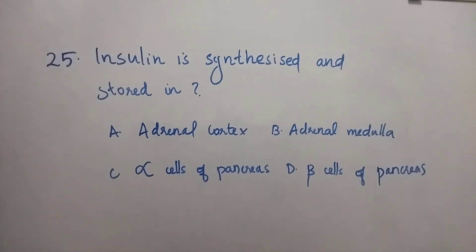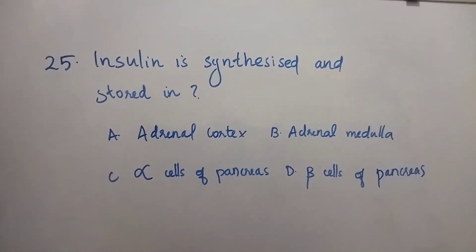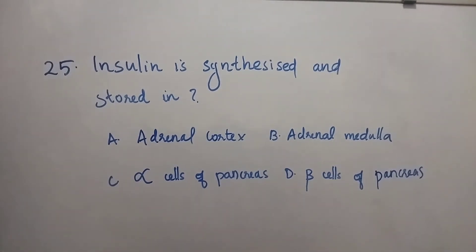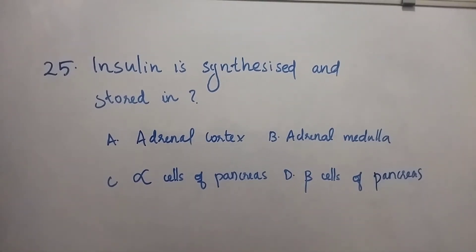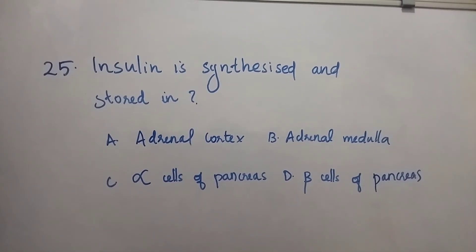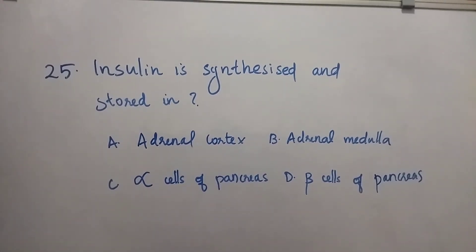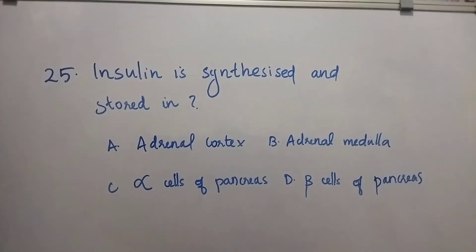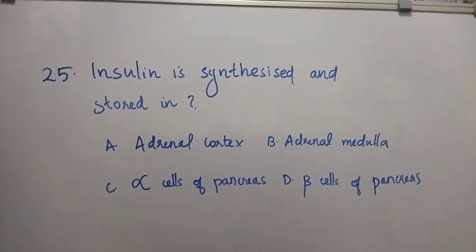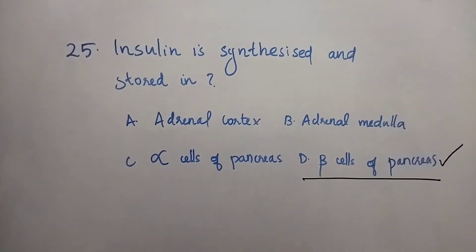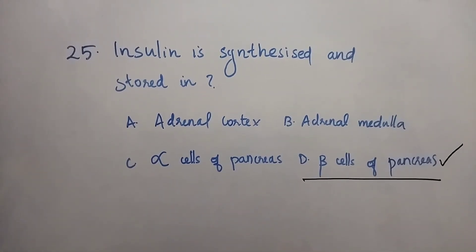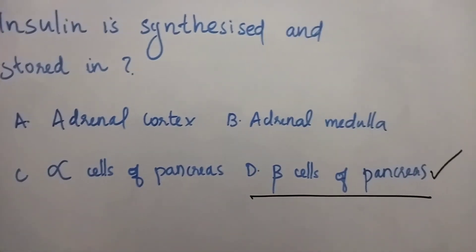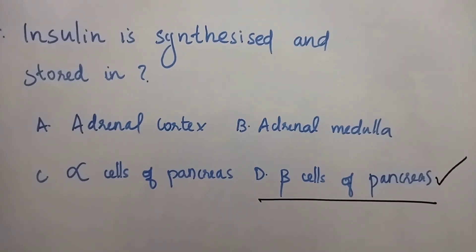Question number 25: Insulin is synthesized and stored in — Option A: Adrenal cortex. Option B: Adrenal medulla. Option C: Alpha cells of pancreas. Option D: Beta cells of pancreas. The right answer is Option D, Beta cells of pancreas. Insulin is synthesized and stored in the beta cells of the pancreas.